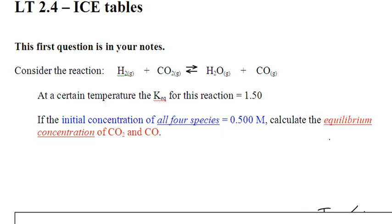Learning target 2.4 is on ICE tables. The previous video introduced the more straightforward versions. I'd like to show you the more complicated version, especially if you missed class — this is one you're going to want to watch. This first example is in your notes; we are going to do this in class, so you can either watch this again or watch it before. Here we go.